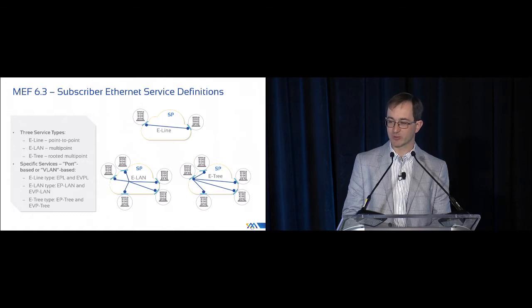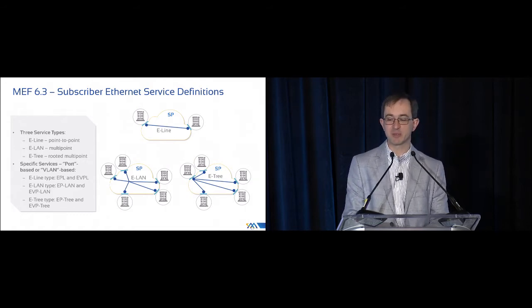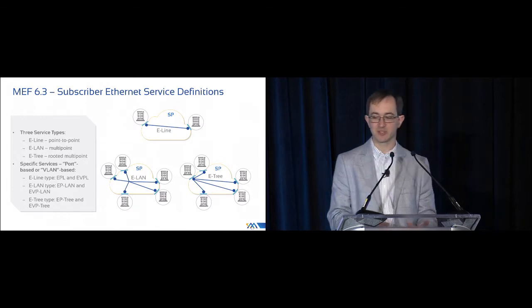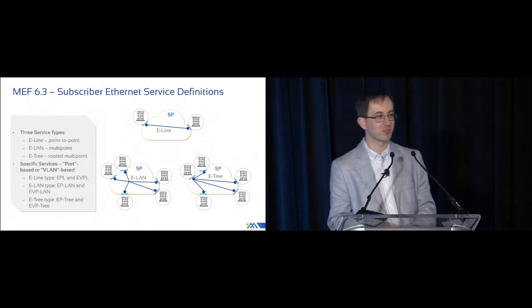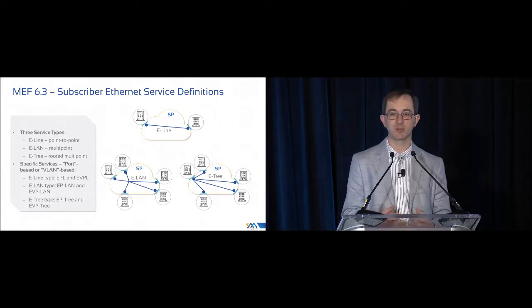So what do we do with those attributes? We turn them into service definitions. These are probably familiar to most people. We have three types of service: E-line, which is point-to-point; E-lan, which is multipoint; and E-tree, which is rooted multipoint, or hub-and-spoke if you prefer.